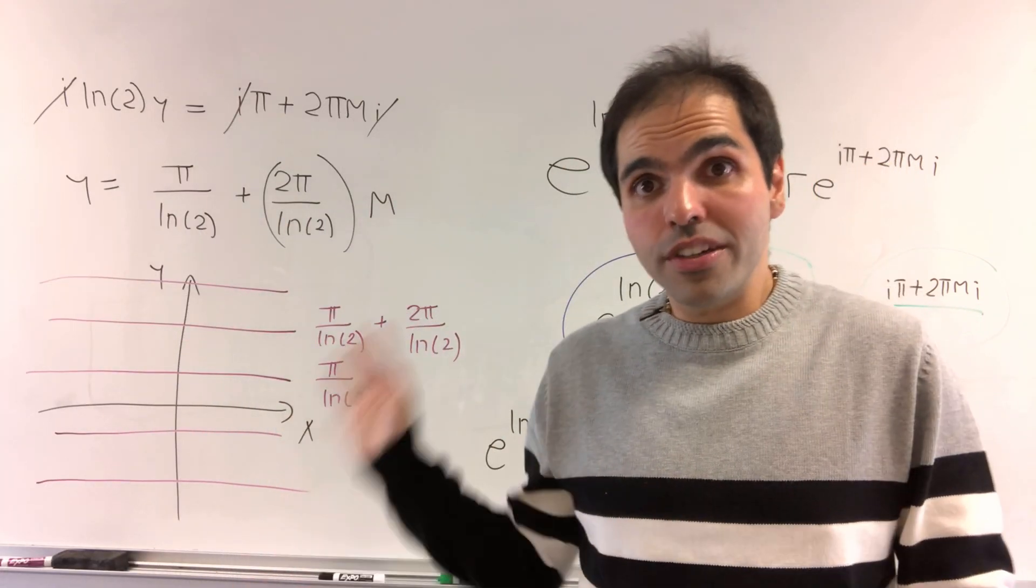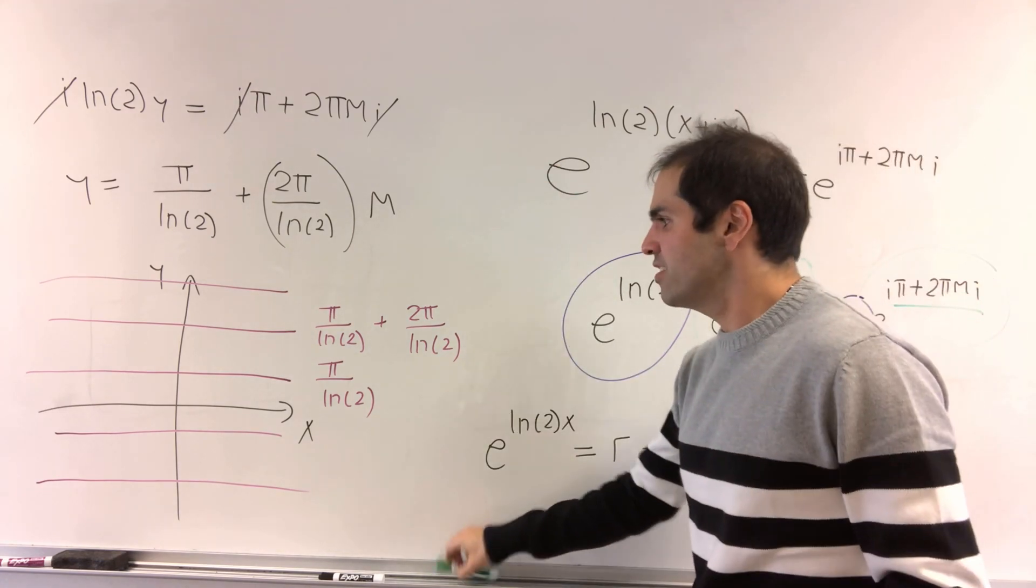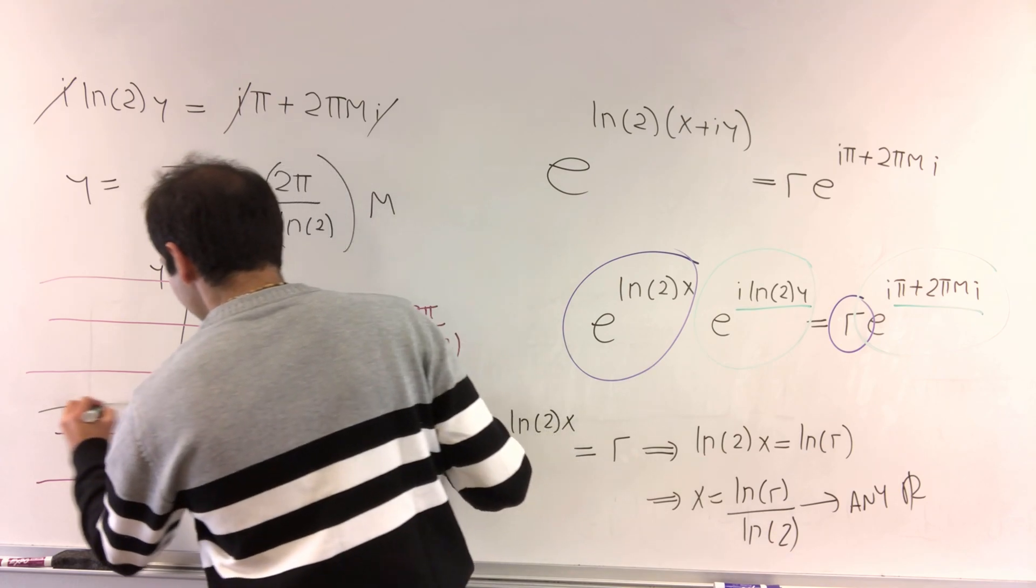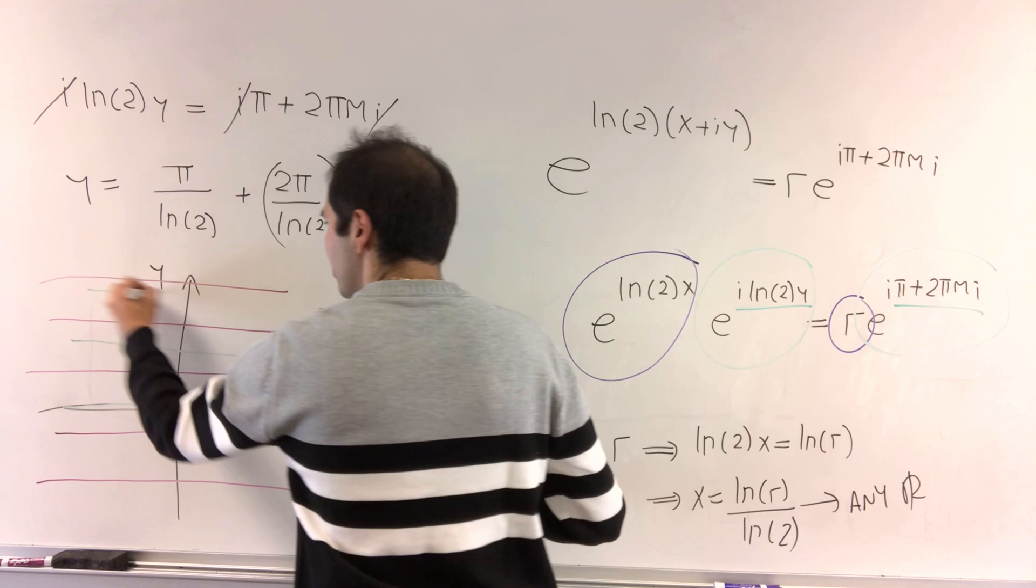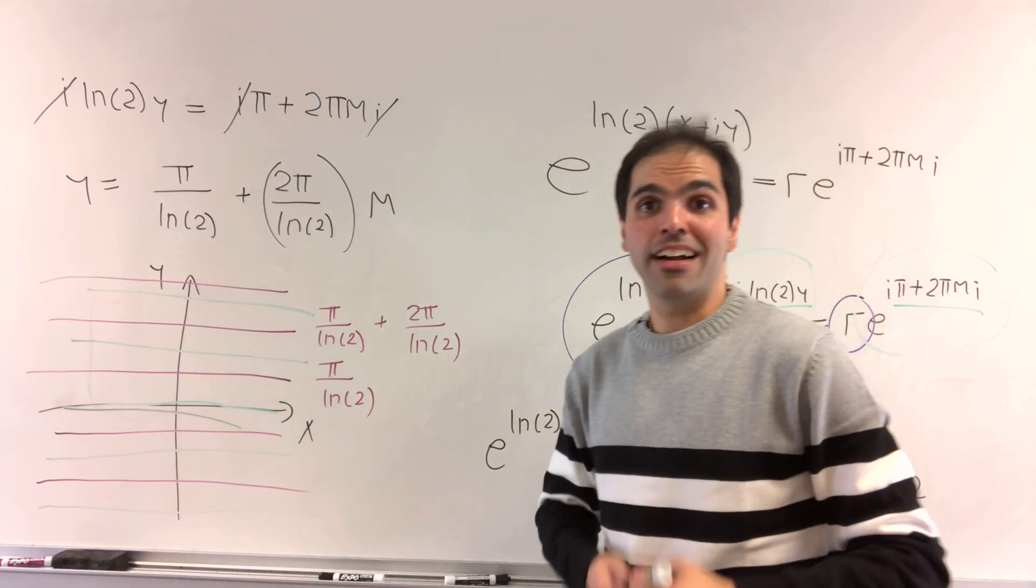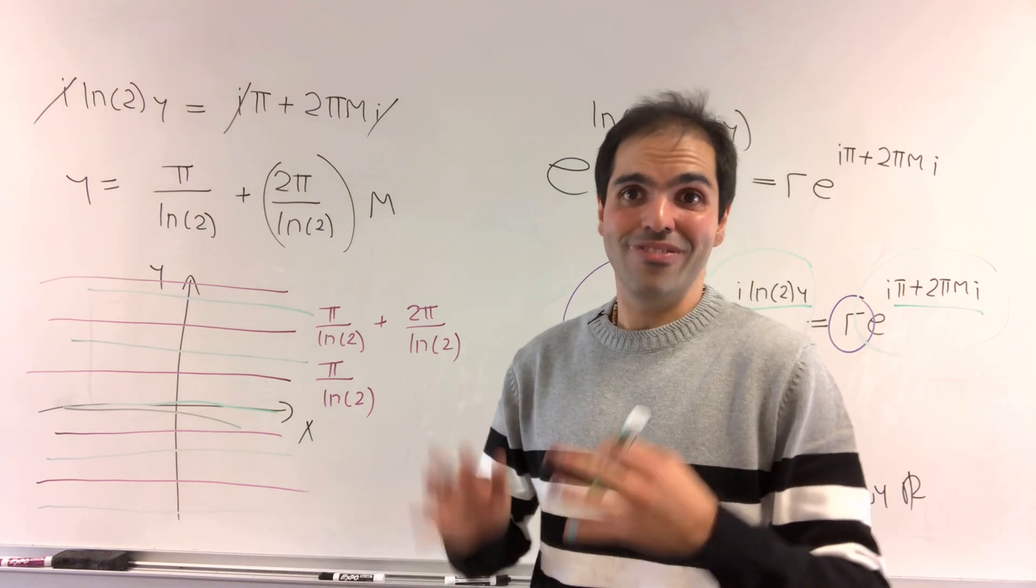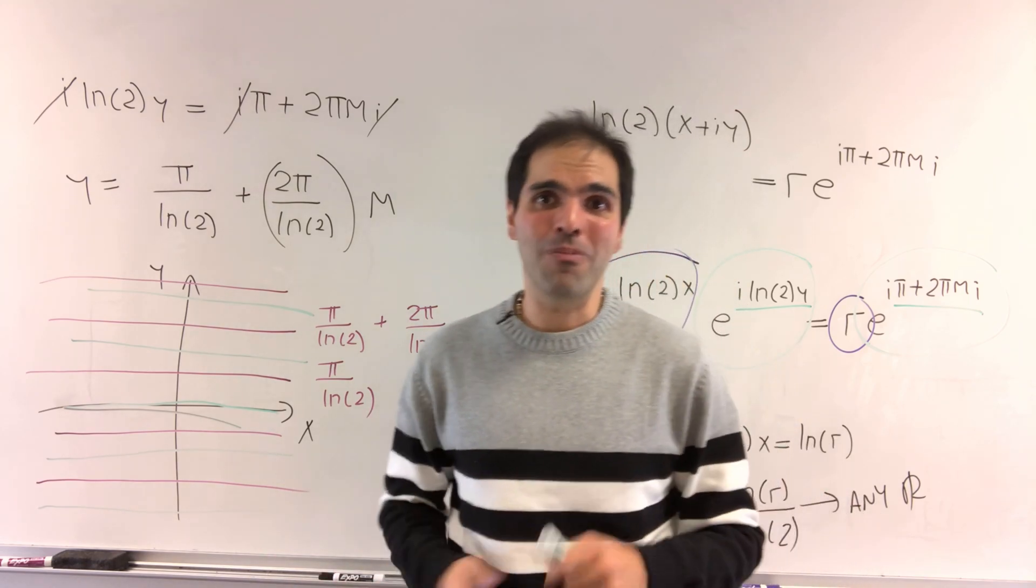Which, if you want, you can also repeat the same thing and figure out when 2 to the x is positive. Well, it does happen for the real axis, but then it turns out you also get solutions that are parallel horizontal lines, which, again, it's very neat and shows you something very interesting about complex numbers.